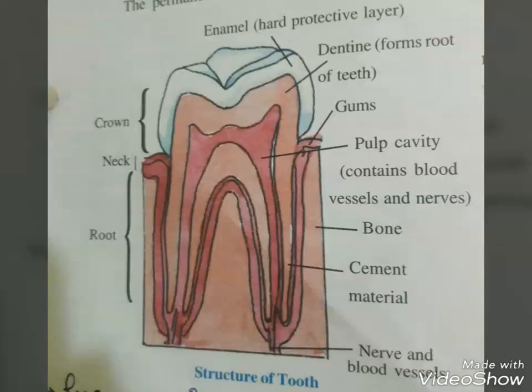The activity of the gastrointestinal tract is under neural and hormonal control for proper coordination of different parts. The sight, smell, or presence of food in the oral cavity can stimulate the secretion of saliva. Gastric and intestinal secretions are also similarly stimulated by neural signals. The muscular activities of different parts of the alimentary canal can also be moderated by neural mechanisms, both local and through the CNS.